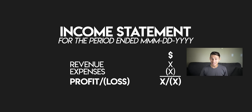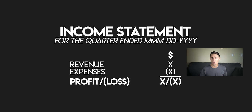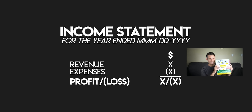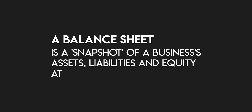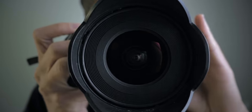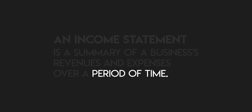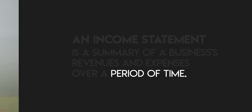The income statement always covers a period of time — typically a month, a quarter, or a full year. Here's a helpful analogy from the book The Accounting Game, which I recommend if you're new to accounting. If a balance sheet shows us a snapshot of a business's assets, liabilities and equity at a single point in time, you can think of it as a photograph or a still frame taken from a video. Whereas the income statement covers a period of time — it's like watching a clip of that video. It has a beginning and an end, and if we analyze it carefully, it can tell us a story.